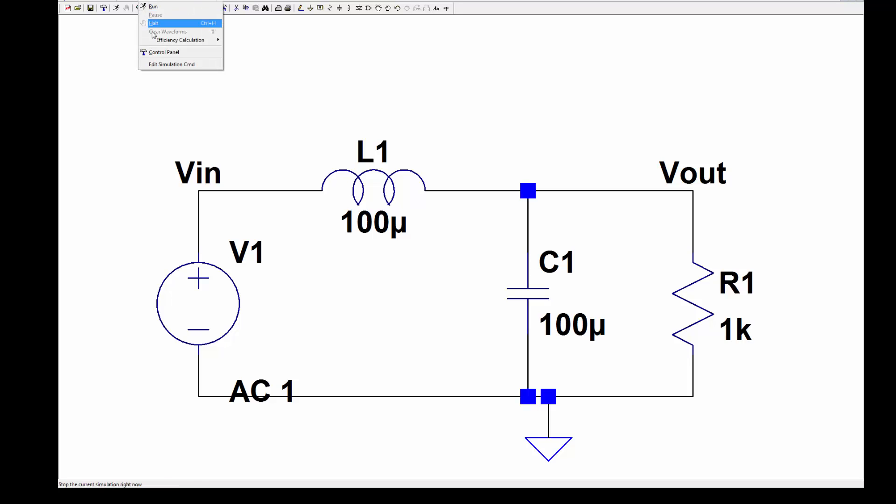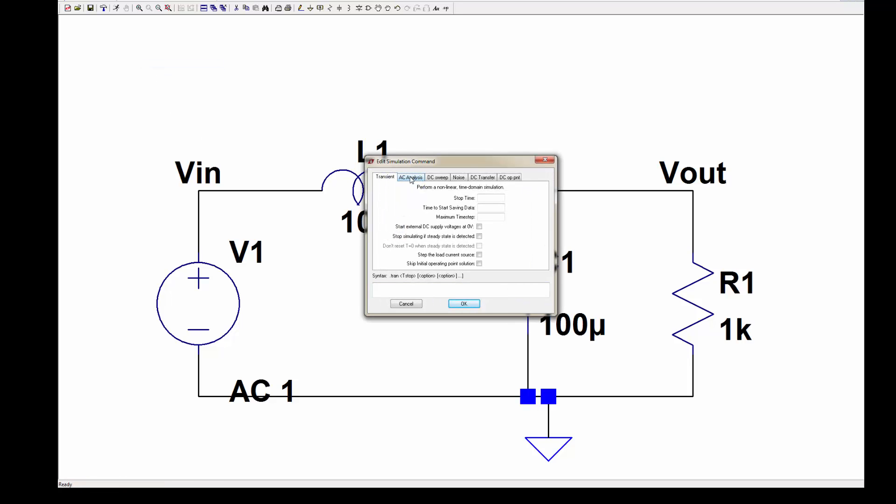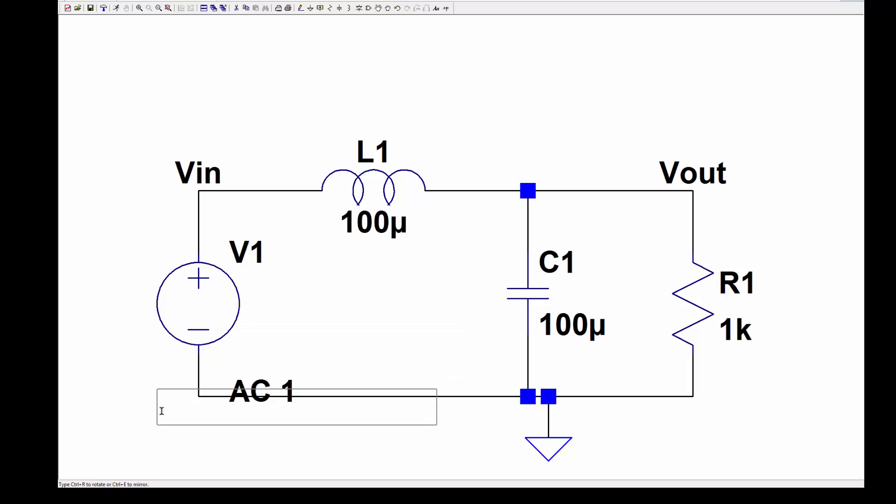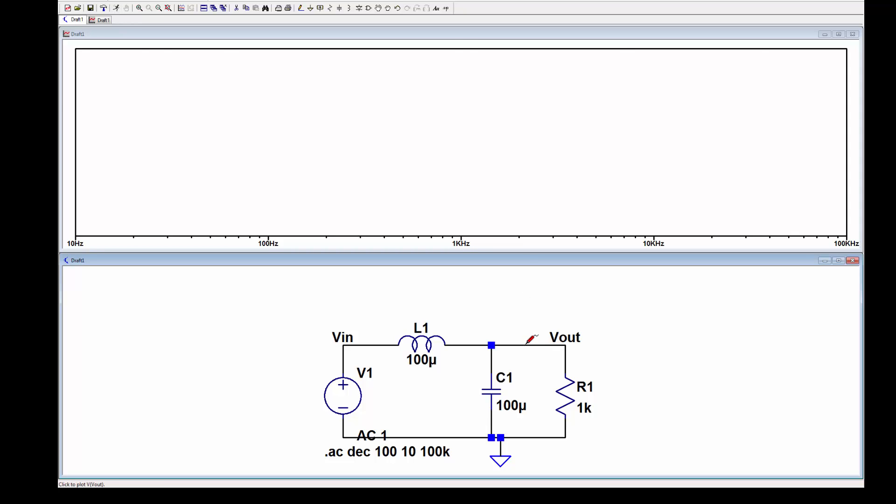So we go to simulate tools, and we go to edit here, and we're going to do an AC analysis. And we're going to go, this is octave. We usually go a decade, and typically 100 points per decade. And then the start frequency, I'm going to put as 10 hertz, and stop frequency, 100 kilohertz. So here's where our AC source is, and we're going to now go ahead and simulate this, just by hitting this running man.